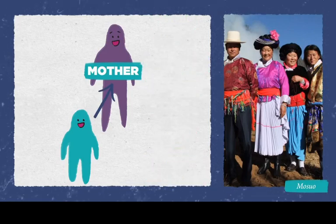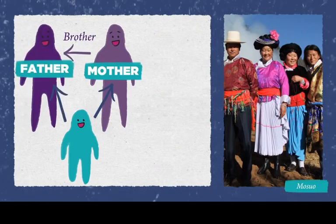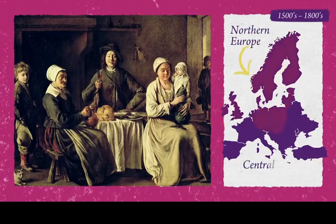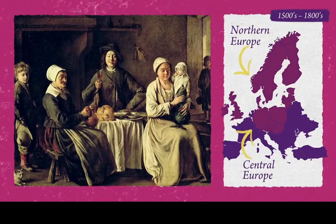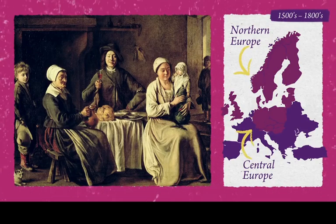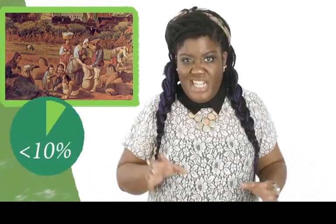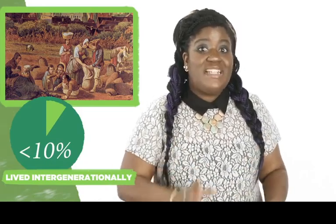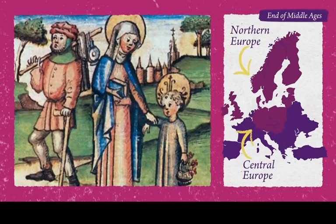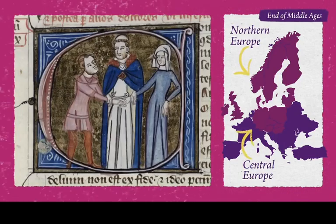Your biological father wouldn't even live with you, and your mother's brothers often filled in the role of the father figure. In terms of European history, from the 1500s until the dawn of the Industrial Revolution, it was common for peasant families in northern and central Europe to live in two-generational households — parents as the older generation and children as the second. Only less than 10% of these peasant families lived intergenerationally, partly because grandparents didn't live long enough. By the end of the Middle Ages, most families in those regions were in the traditional nuclear format, owing in part to the influence of Christian church-sanctioned monogamy.